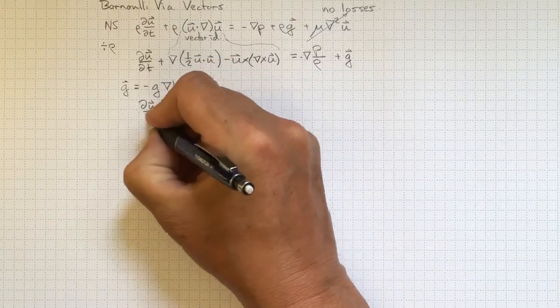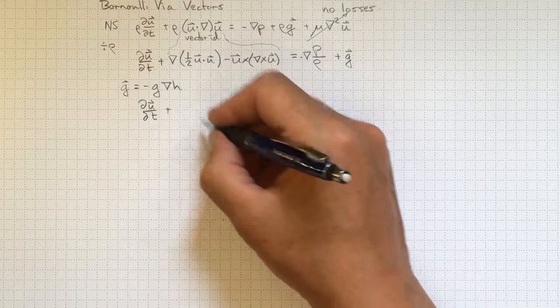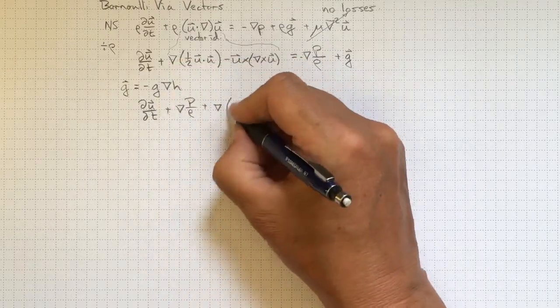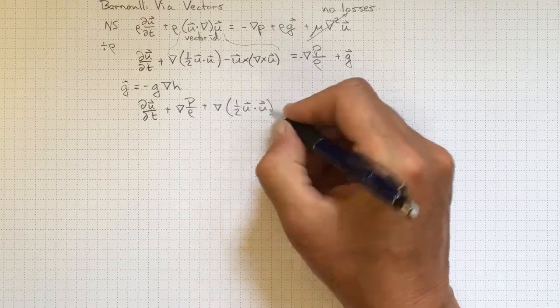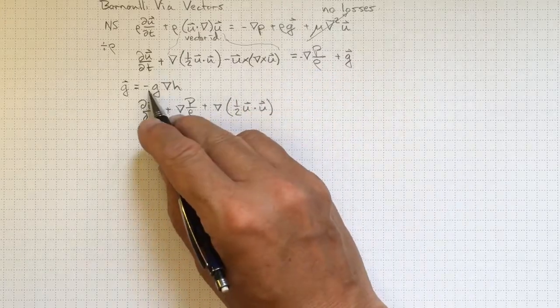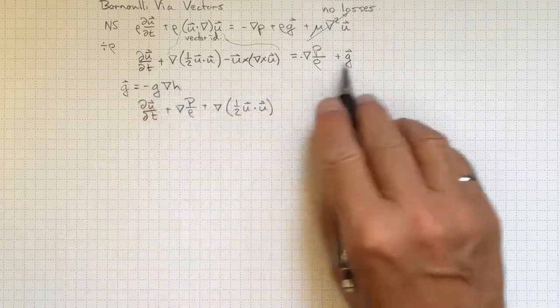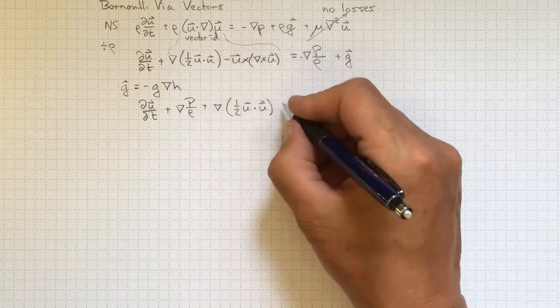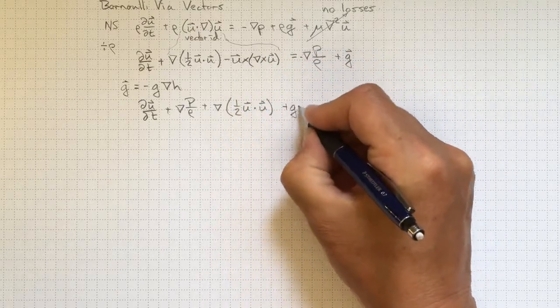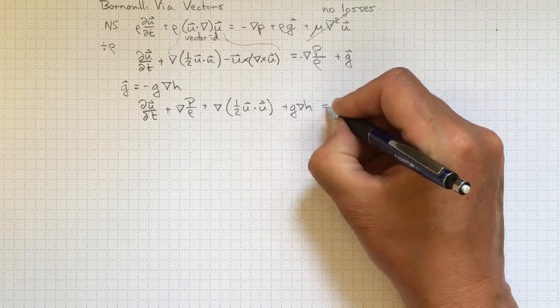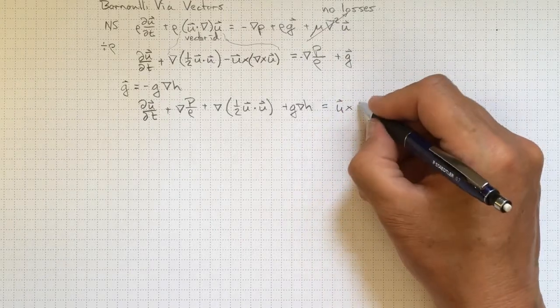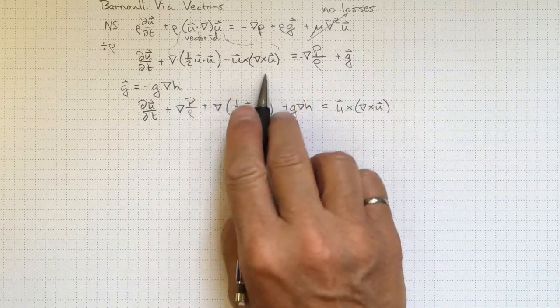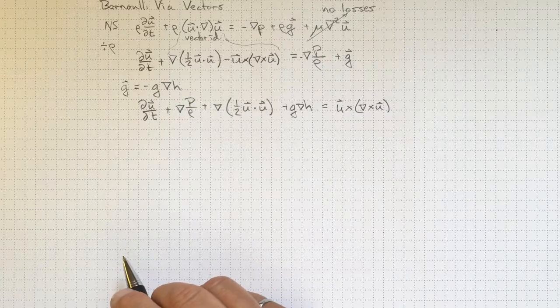Collecting again, di u di t, plus grad p over rho, plus this term here, that grad one half u dot u, and with g coming in here, that'll be negative g grad h. So this will be, when we take it to the other side, positive g grad h. All equal to u cross grad cross u. This thing that we got out of the identity here, that we're not quite sure what to do with, but we'll carry it along for now.